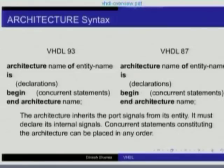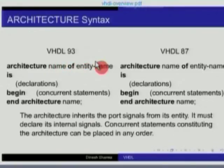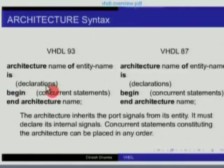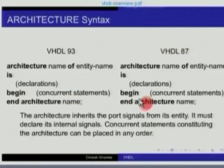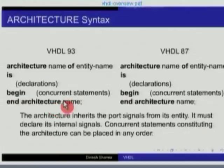Here is the syntax for an architecture. You say 'architecture name of entity_name is'. Then you declare your various signals and variables, then the keyword 'begin', followed by various concurrent statements or concurrent blocks. Remember, a concurrent block can then have sequential statements. And then 'end architecture name'. Notice that in VHDL 87, the word 'architecture' was required in case of an architecture but was not required for an entity. VHDL 93 has made it uniform — everything requires what is ending and what is its name.